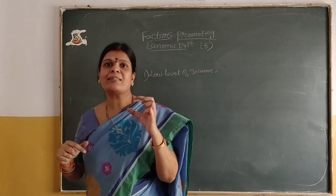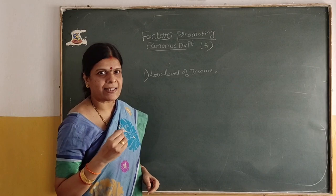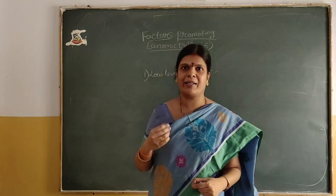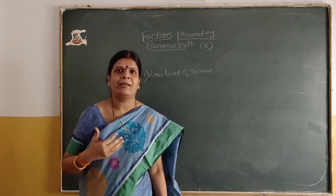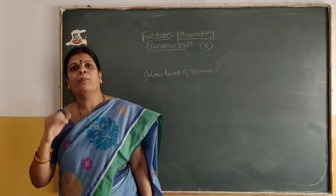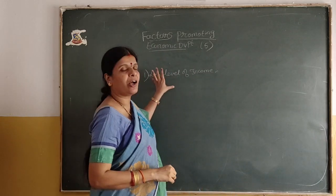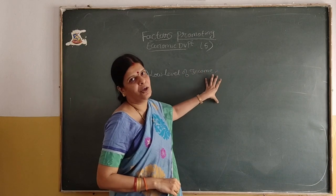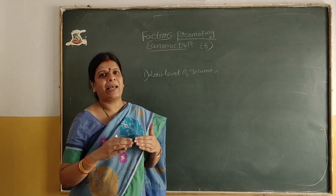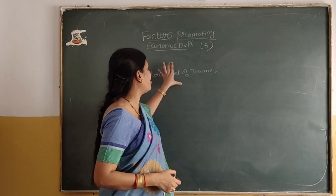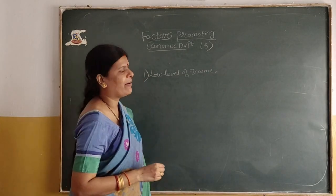Because of low level of income, there is low level of savings, and people could not contribute towards economic growth. Due to absence of wealth, they could not contribute more. India's contribution towards national income is very less compared to developed countries. The second characteristic is predominance of agriculture. Two thirds of population in India depends on agriculture, contributing only 18% to national income. They use outdated techniques of production, depending on rainfall for irrigation, and lack proper technology and research and development.